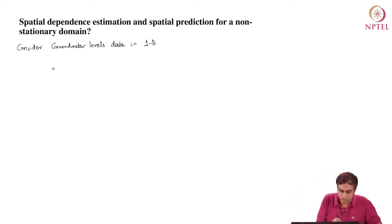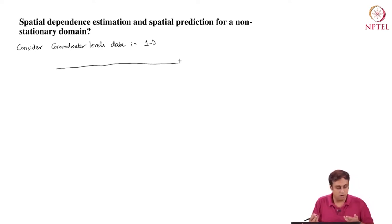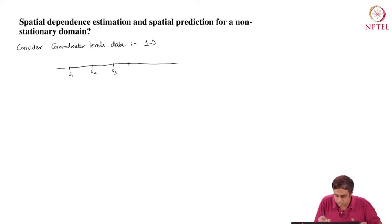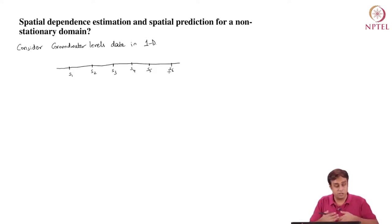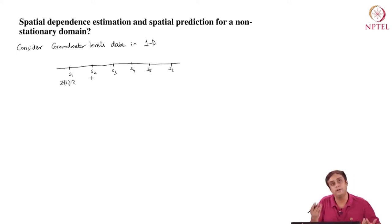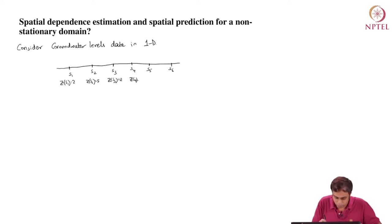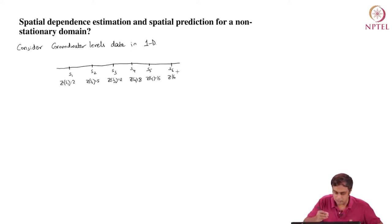Let's draw that representation. We have a ground surface. On this ground surface, I have locations S1, S2, S3, S4, S5, and S6. At each location, I have a realization: Z(S1) = 2 meters depth, Z(S2) = 5, Z(S3) = 12, Z(S4) = 8, Z(S5) = 15, and Z(S6) = 20.